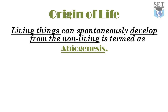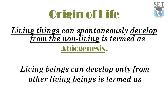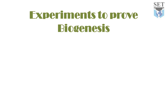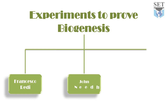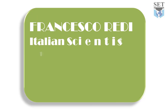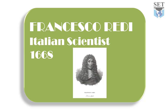The opposing concept — that living things can develop only from other living beings — is termed biogenesis. Scientists who contributed to establishing the idea of biogenesis include Francisco Redi, John Needham, and Louis Pasteur. Redi was an Italian scientist who performed an experiment in 1668 to prove that living things can only develop from living things.